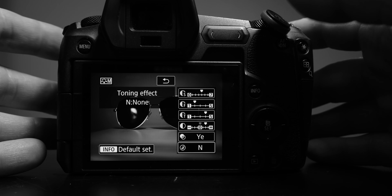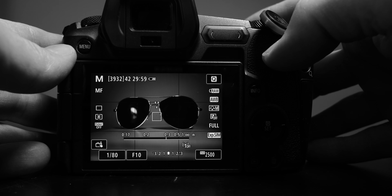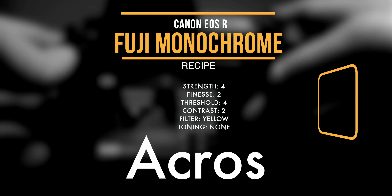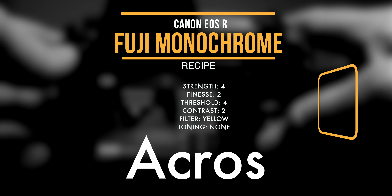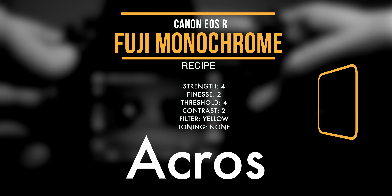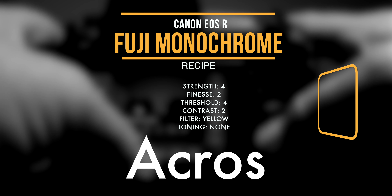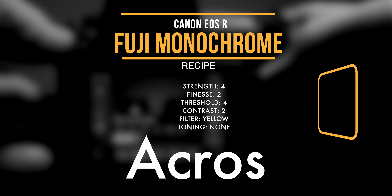To create the Acros film simulation look, these are the settings I use on the Canon EOS R. Set your sharpness strength to four — that's four out of seven. Then set your sharpness finesse to two, that's two out of five. Set your sharpness threshold to four, again four out of seven. Set your contrast to either two or three — play around with that and see what you like. Set your filter to yellow, and I just leave the toning effect off. Those are the settings that will dial you in to an Acros film simulation look on your Canon EOS R.